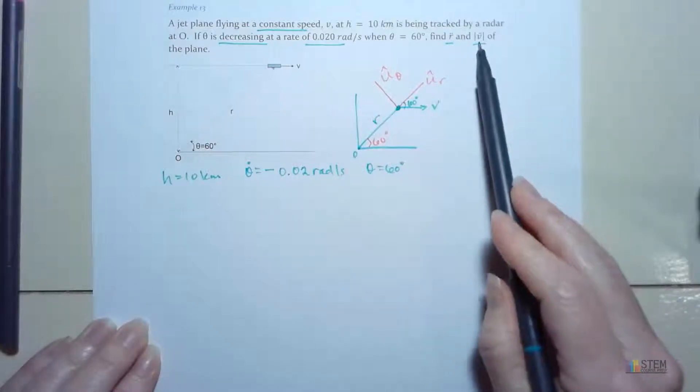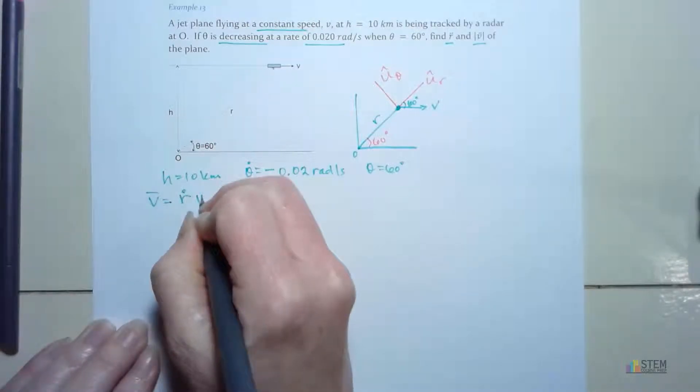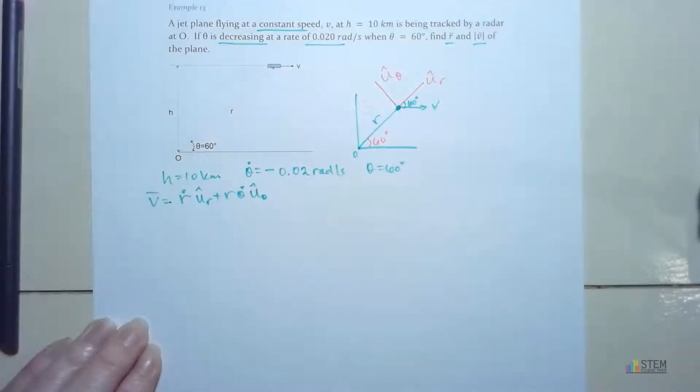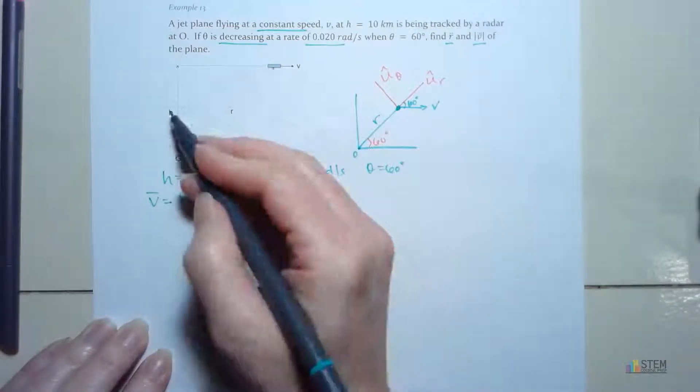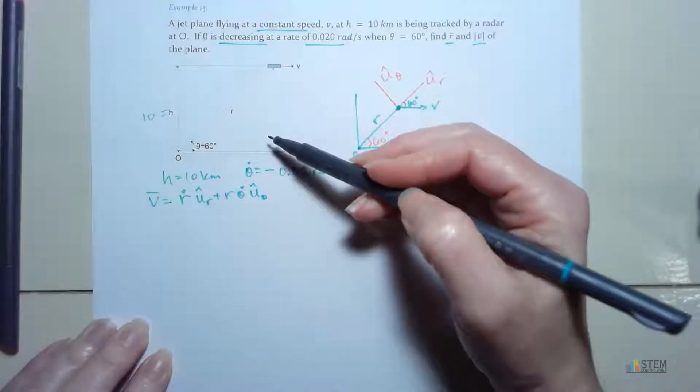Now I want to find the magnitude of velocity. So let's go ahead and write down our equation for the velocity vector. So that's just R dot times U sub R plus R theta dot times U sub theta. And now let's see what we can find. So let's go ahead and I'm going to find R. R is going to be easy to find. So this distance between O and then the plane. If you look, we know that H here is 10, right?